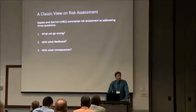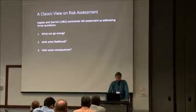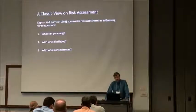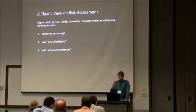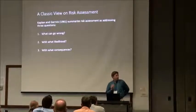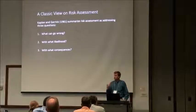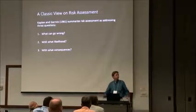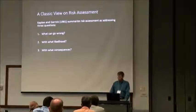A classic view comes from a 1981 paper by Kaplan and Gehrig, first issued with the journal Risk Analysis. Risk assessment addresses three questions: what can go wrong, with what likelihood, and what consequences? If you're doing a risk assessment, you're dealing with those three things — not asking what should I do about it. Kaplan and Gehrig were nuclear engineers writing shortly after Three Mile Island, but the framework applies broadly across many areas.